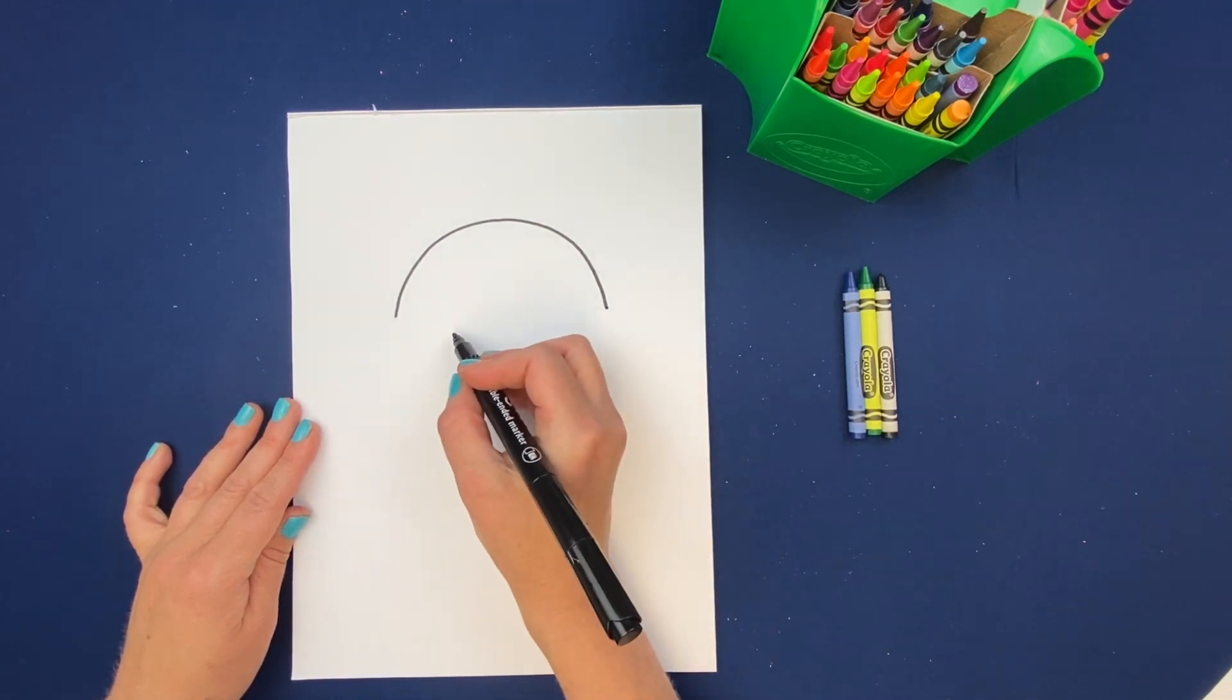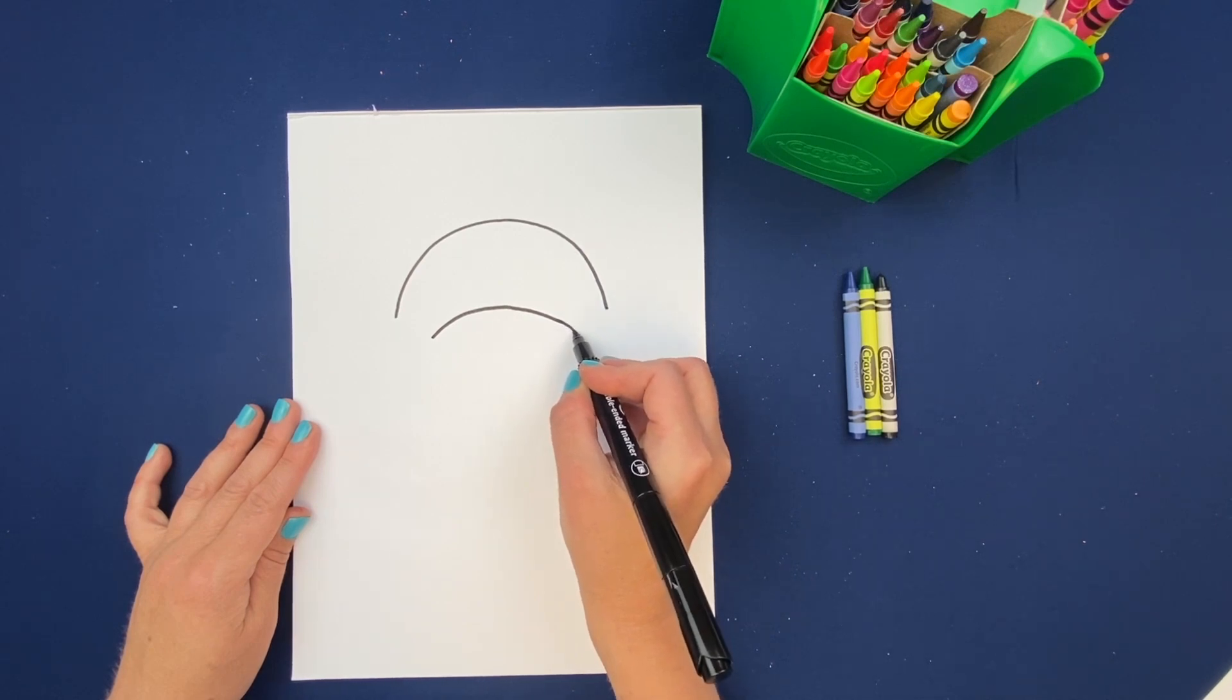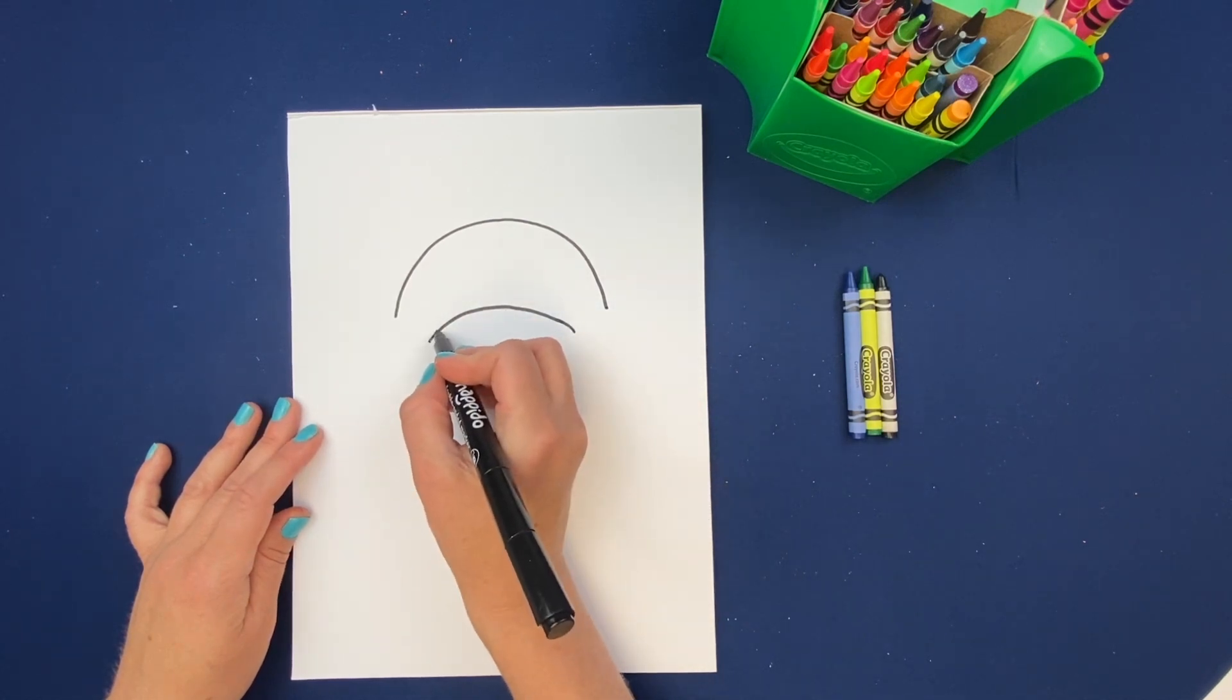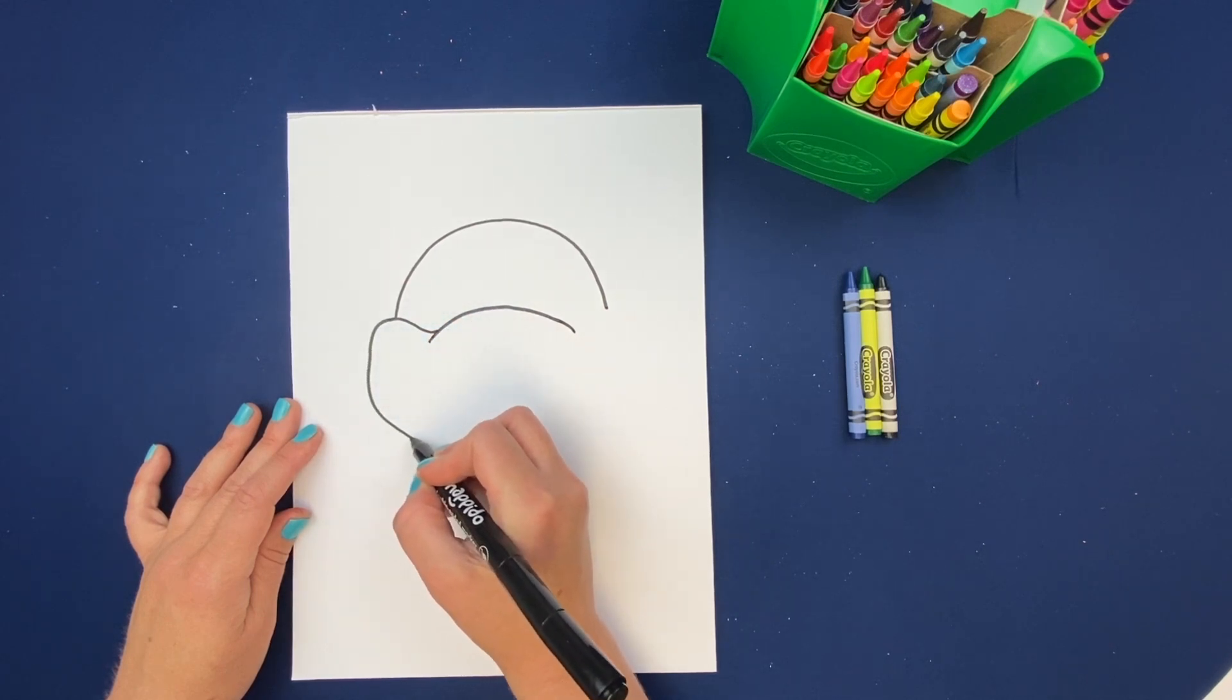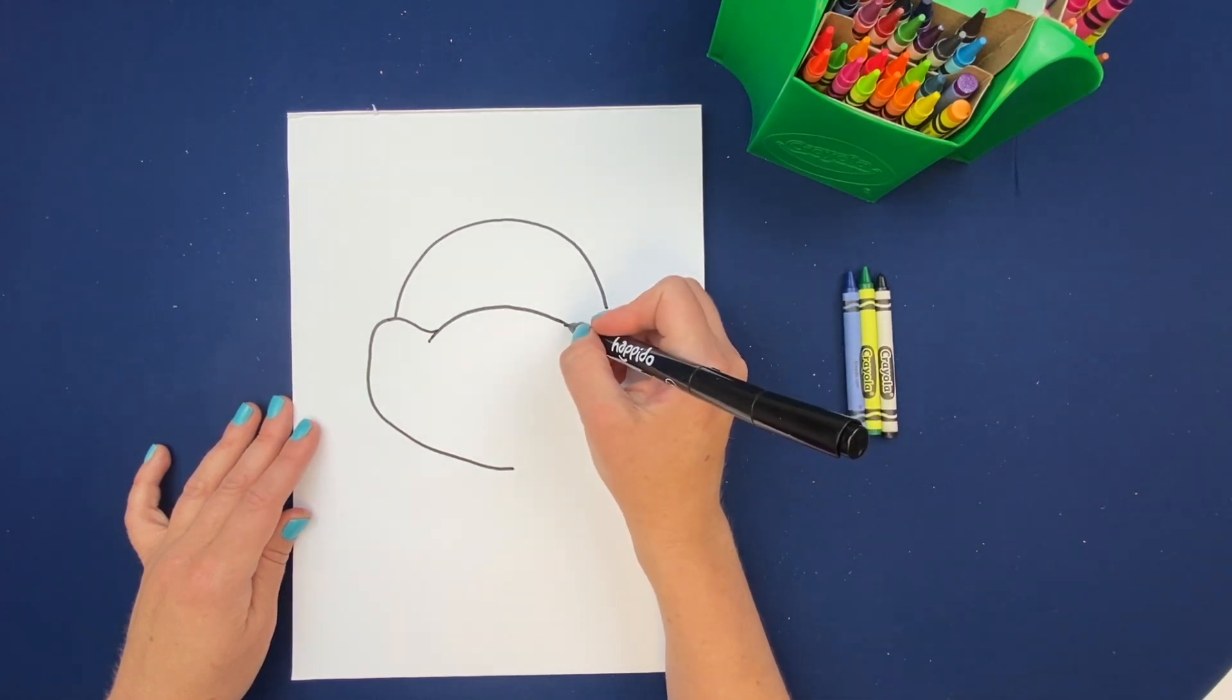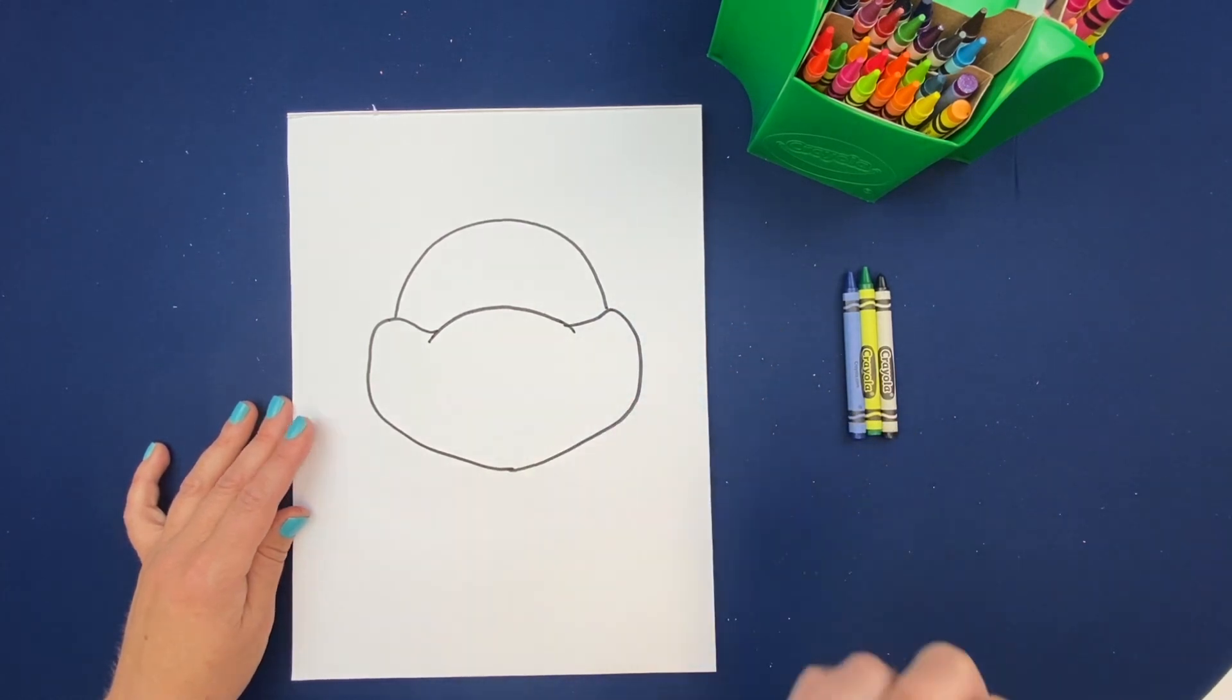Then what we're gonna do is come in and do that nose. So we're gonna do just a slight arch right there and bring it down. And we're gonna come out to do the face. So we're gonna come up and make those cheeks come round to his chin. Then we're gonna do the same thing on this side up and round back down to meet where that chin is.